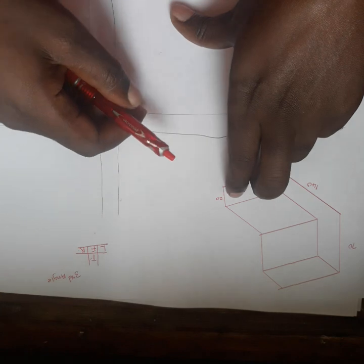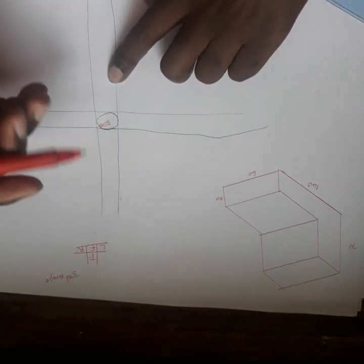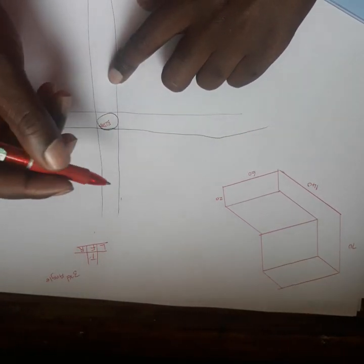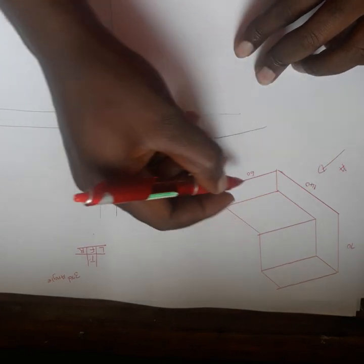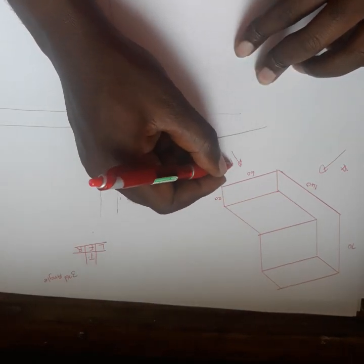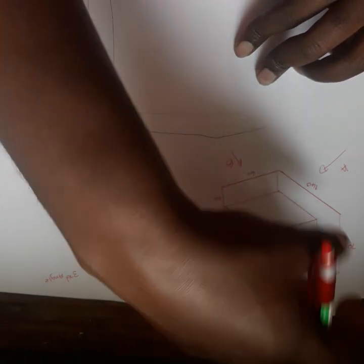Now, we have this side called side A, we have this side called side B. Then we have this side which is not a side, it's the top view.